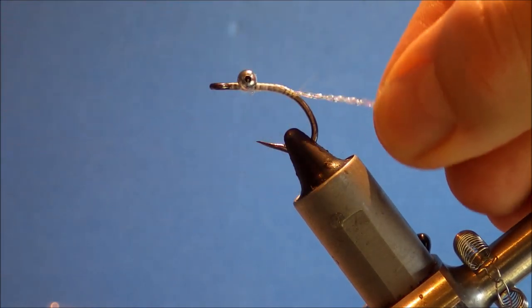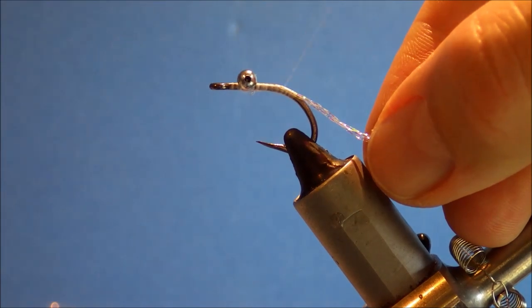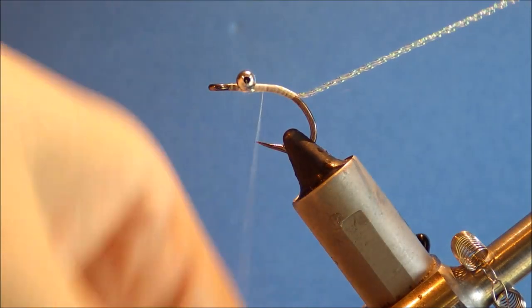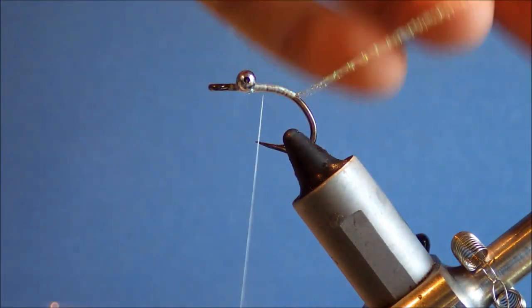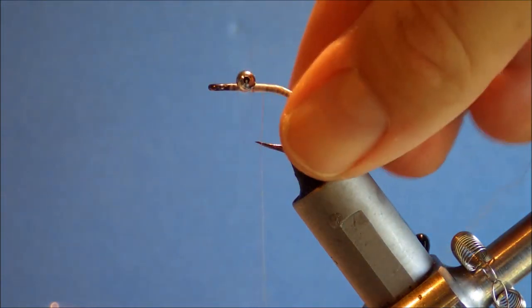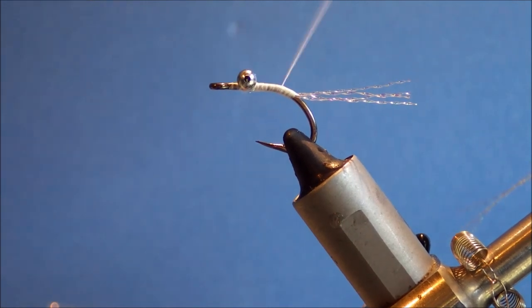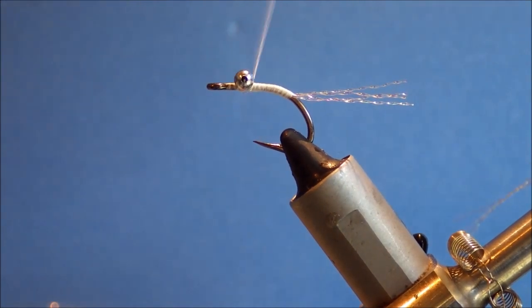And then, run it back. Make sure that's nicely secured. Then, just to measure the tail, I'll just pull it forward, trim it just in front of the eye. And that's just nice. Then I'll run my thread up and down a couple of times to help give a nice white underbody so the pearl shines through instead of the black of the hook.